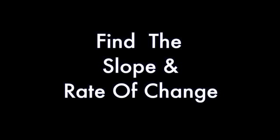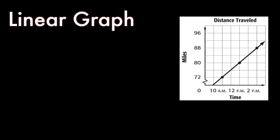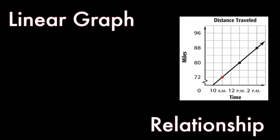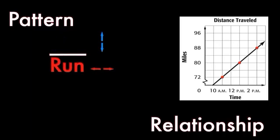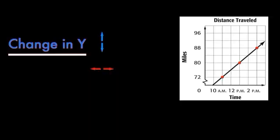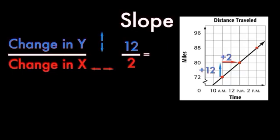I want to find the slope and rate of change. The rate of change — the change in Y over the change in X. On the linear graph of a line, there's a relationship. Every point on the graph follows a pattern. We call it rise over run: rise tells you how much up or down, run tells you how much left or right. Rise over run — here's the formula: the change in Y over the change in X. Y is the change up or down, put it on top. X is the change left to right, put it on the bottom. We got a ratio, call it slope — it's a rate of change.